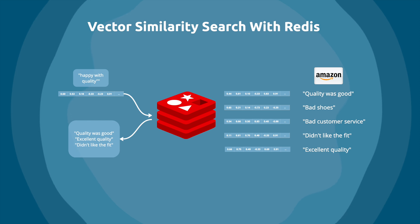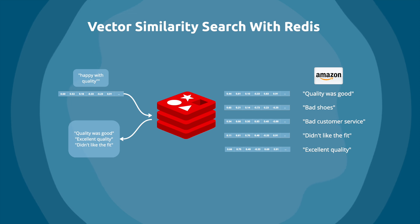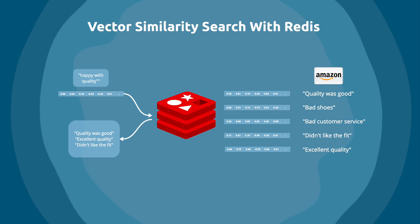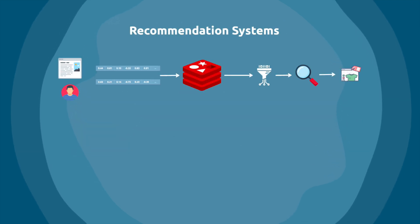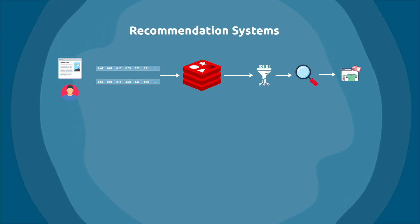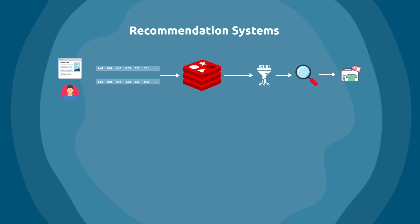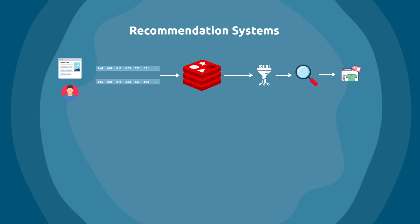The way vector similarity search works in Redis is similar to how it works in other vector databases. A search query is transformed into a vector embedding and Redis then uses a distance metric to measure the similarity between vectors and fetches and returns the ones that are closest in distance. This ensures that the returned items are semantically similar to the search query. Two of the most prominent use cases of vector similarity search in Redis are recommendation systems and personalization. E-commerce companies are building hybrid vector search systems that are a combination of traditional keyword search and vector search.